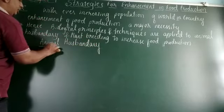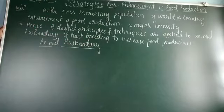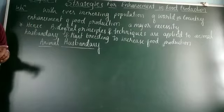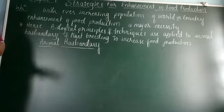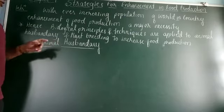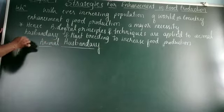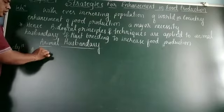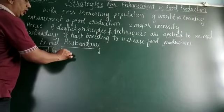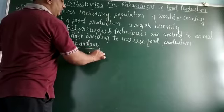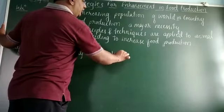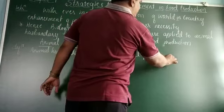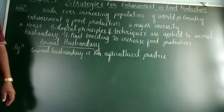Now, the discussion about animal husbandry. Animal husbandry is an agricultural practice of breeding and raising of livestock, which are useful to mankind.